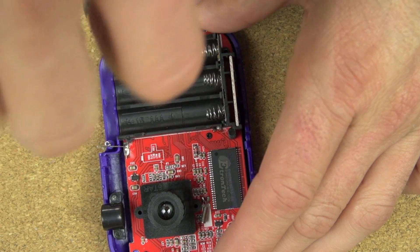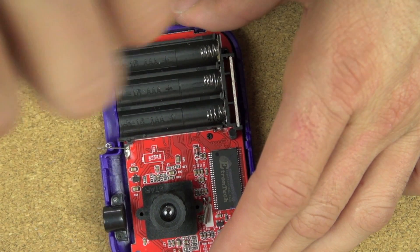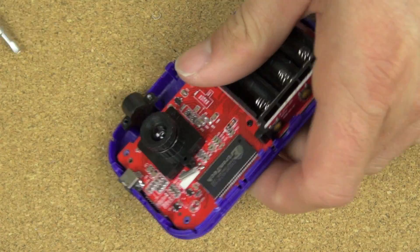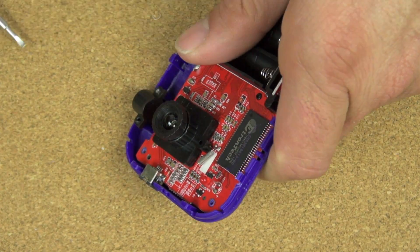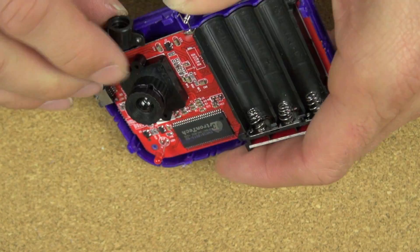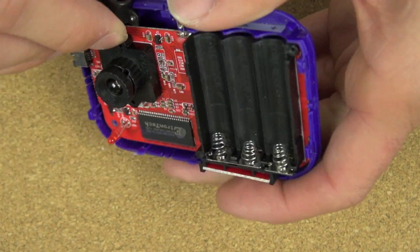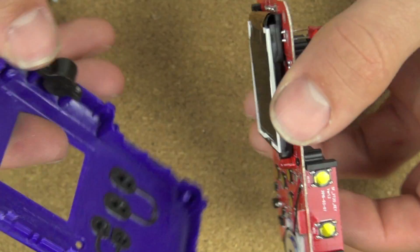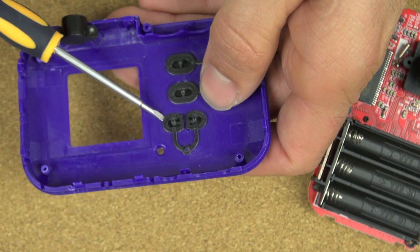So now let's take out the screws that are holding the board in place. And we've tried to remove the screws for our tripod mount, but one of them is stripped, so we're just going to leave it in place.